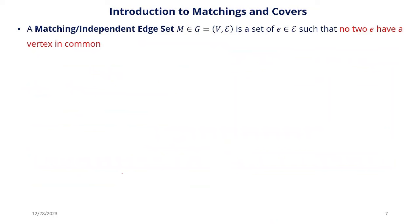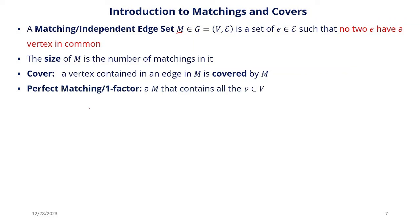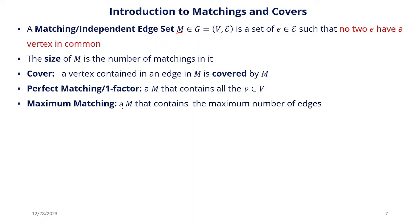A matching, or independent edge set — both used interchangeably — represented by M in a graph, is a set of edges such that no two edges have a vertex in common. The size of the matching is the number of edges in it. A vertex contained in an edge in the matching is said to be covered by the matching. A perfect matching, otherwise known as a one-factor matching, is a matching that contains all the vertices of a graph. The maximum matching is a matching that contains the maximum number of edges.